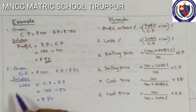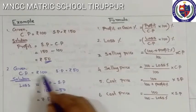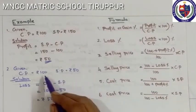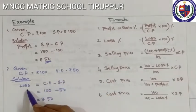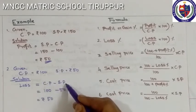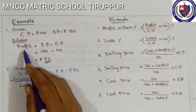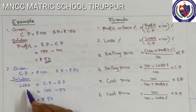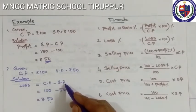Second example: Cost Price is 100 rupees, Selling Price is 50 rupees. Loss equals Cost Price minus Selling Price: 100 minus 50 equals 50. So, Profit equals Selling Price minus Cost Price, and Loss equals Cost Price minus Selling Price.